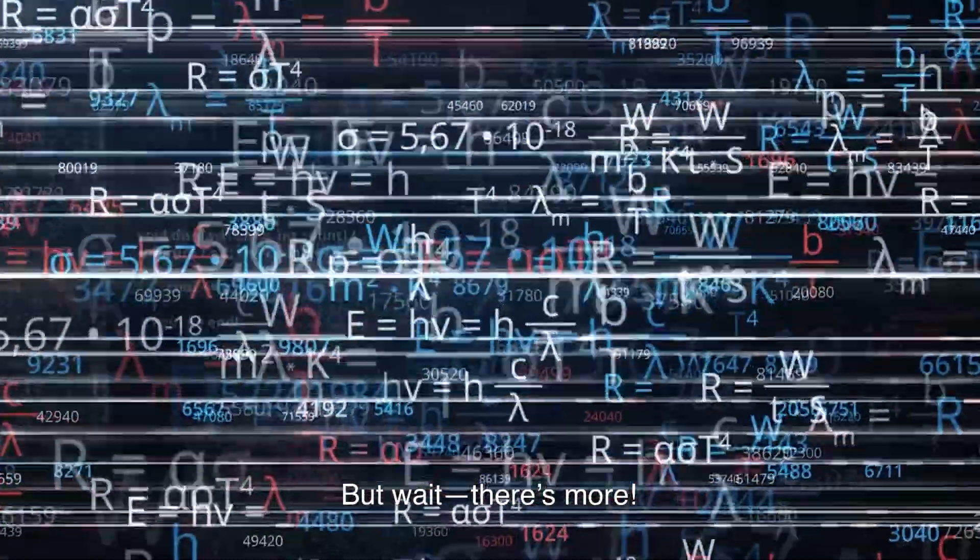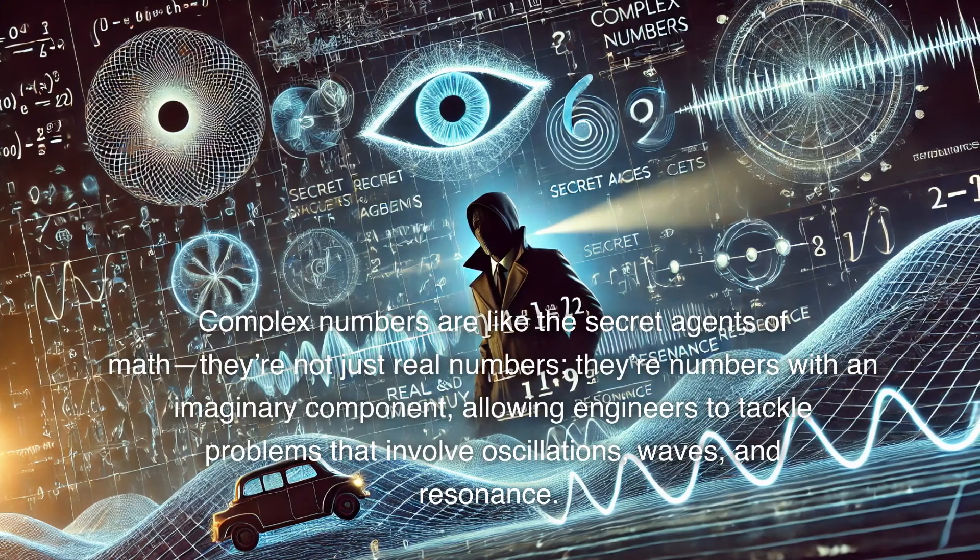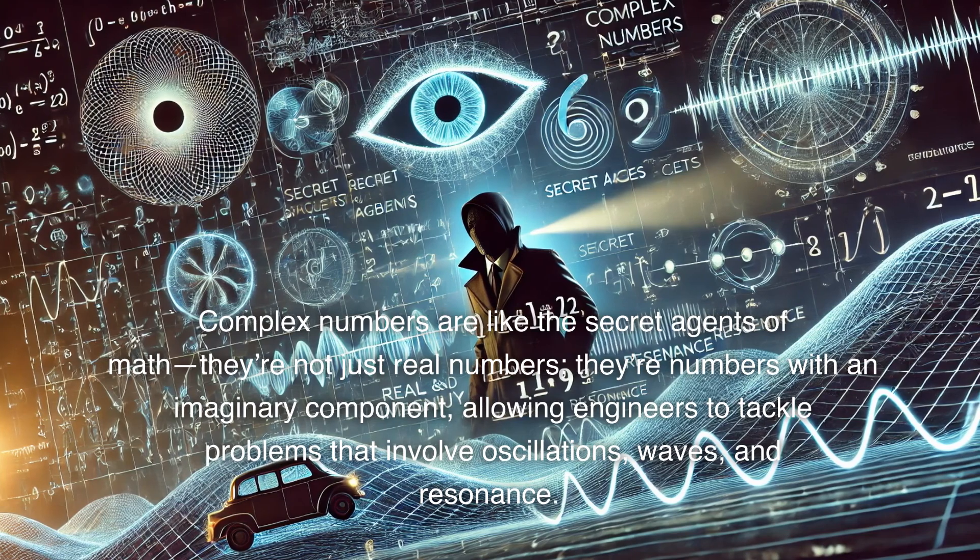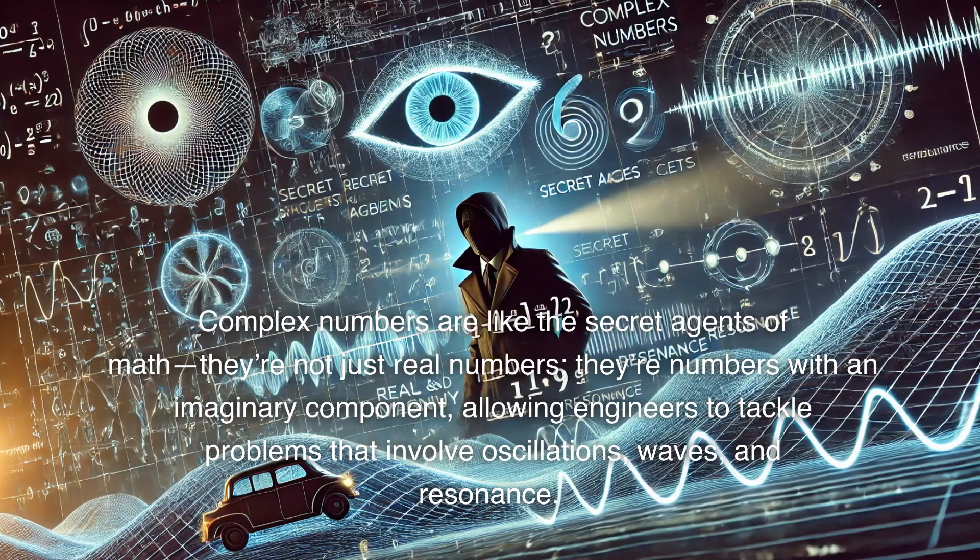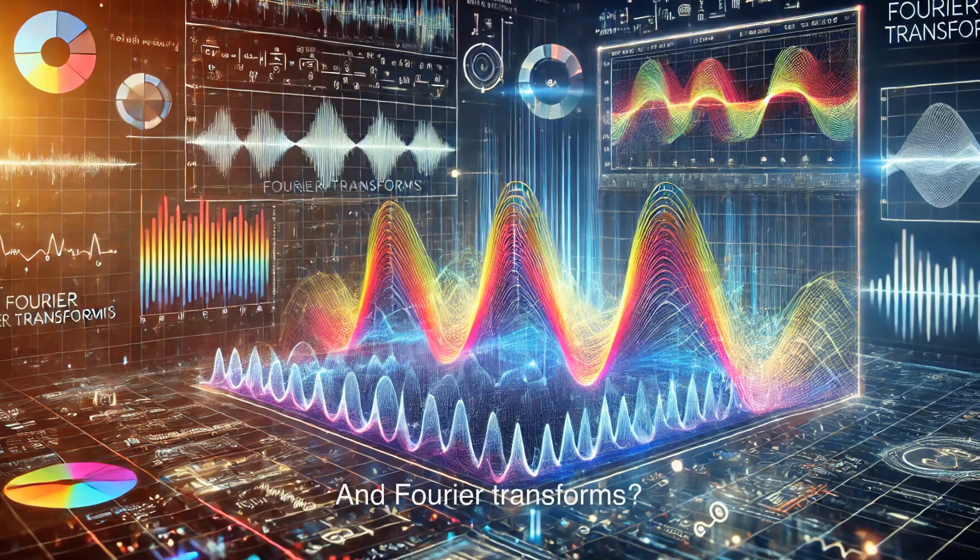But wait, there's more. Let's not forget about complex numbers and Fourier transforms. Complex numbers are like the secret agents of math. They're not just real numbers, they're numbers with an imaginary component, allowing engineers to tackle problems that involve oscillations, waves, and resonance. And Fourier transforms?